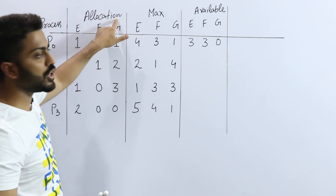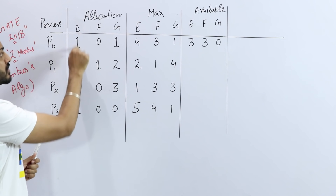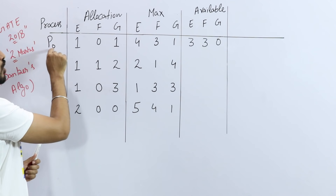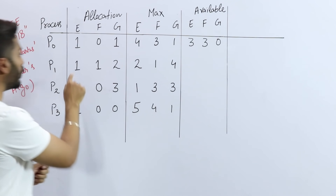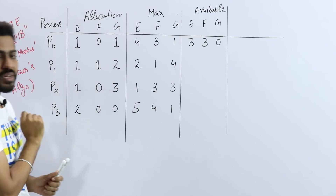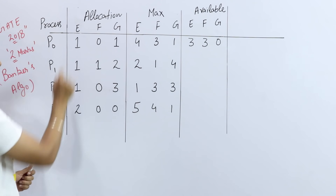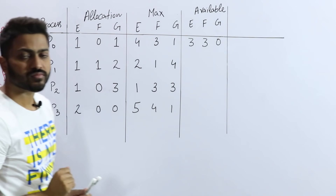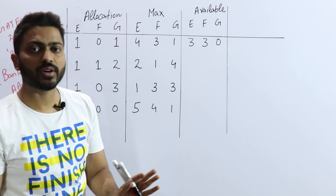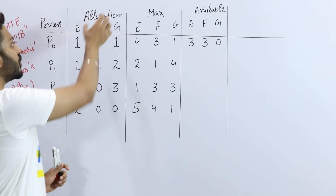The first table given is the allocation table. Allocation means the resources already allocated to each process. For example, 1 resource of type E is already allocated to P0, 1 resource of E to P1, 1 resource of E to P2, and 2 resources of E to P3. These are the number of resources currently held by each process.